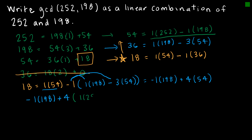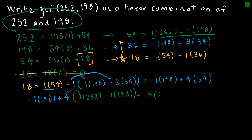Then I write negative 1 times 198 plus 4 times — and instead of 54, I substitute what 54 equals: 1 times 252 minus 1 times 198. I count how many groups of 252 and 198. I have 4 times 1, which is 4 groups of 252. And I have 4 times negative 1 giving negative 4, plus negative 1 giving negative 5 times 198. I could write this as minus 5 times 198, and that is my linear combination.